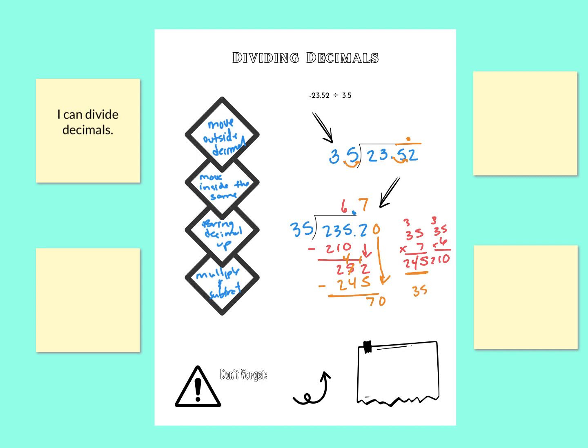35 goes into 70. I think that's 2. So we're going to multiply by 2 and see what we get. Yep, that's 70. So 2 times. And that got us exactly 70.